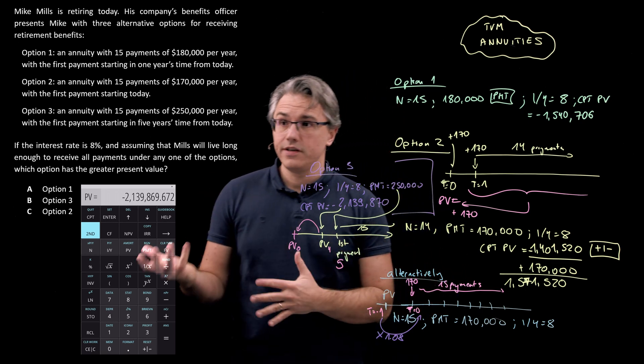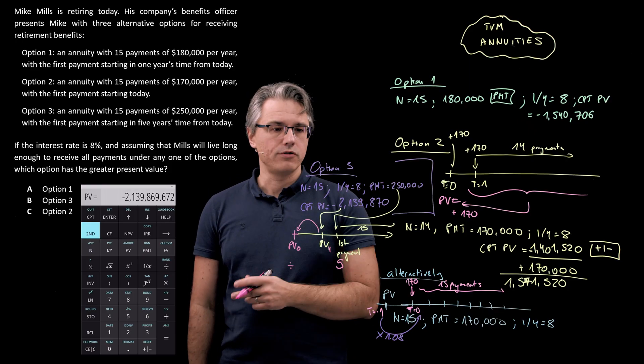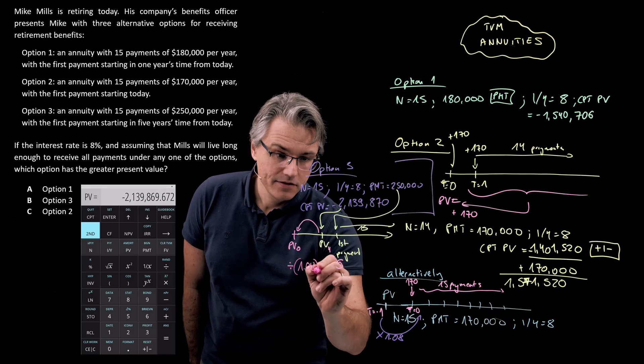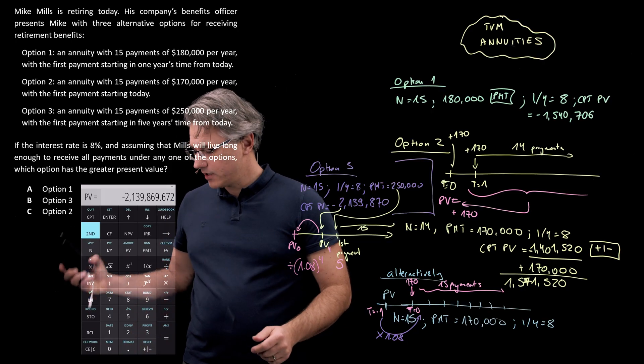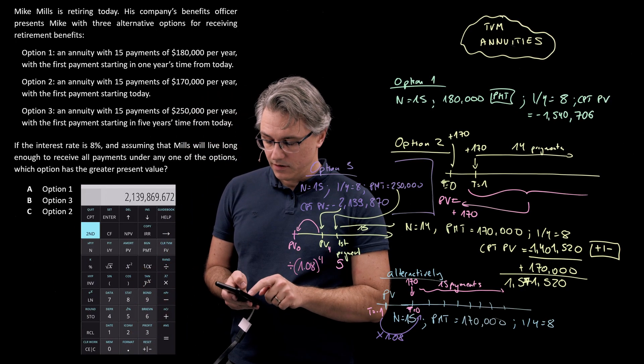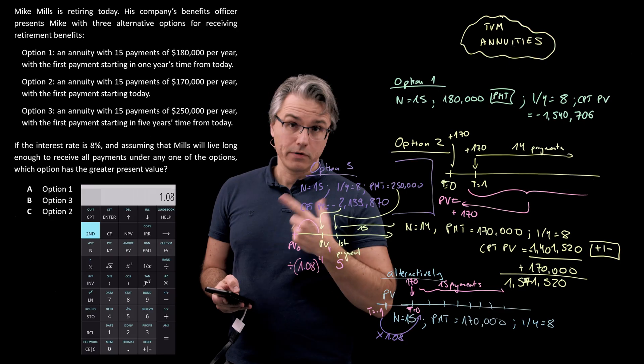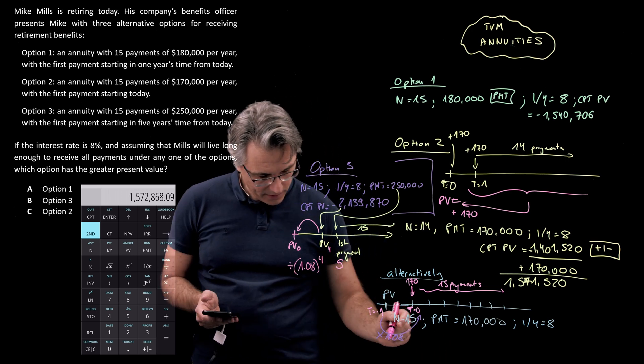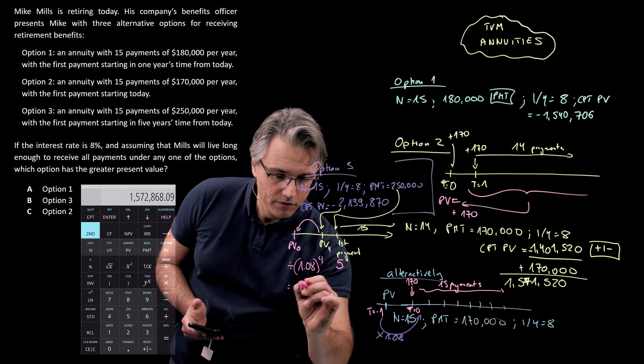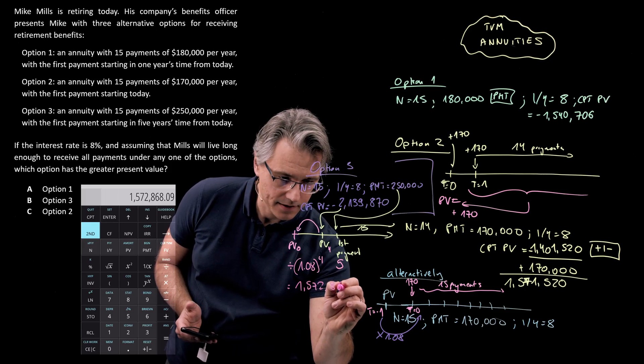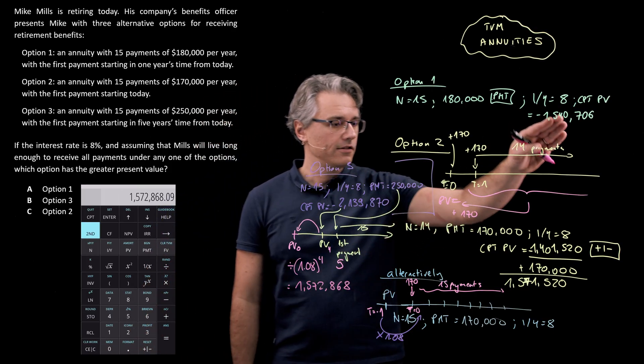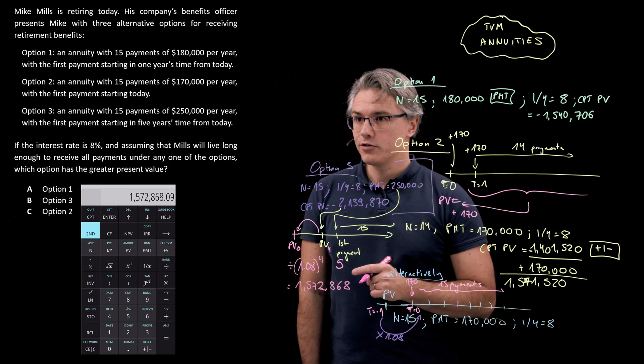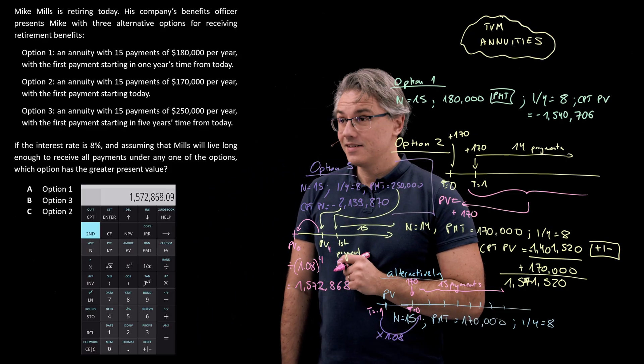So in order to make this a PV at time zero, which will make it comparable with the other computations, we need to discount this back over four periods, over four years. And you can do this using the TVM, or you can simply divide this number, $2,139,870, by a factor of 1.08 to the power of 4. I'm going to get rid of the negative sign by pressing plus minus, divide by 1.08 to the power of 4, equals $1,572,868. So which of these is the highest? It's definitely not the first one. The second one's higher, but this one with $1,572,868 is the highest of the three options in terms of its present value. So the correct answer in this case is option three, and that's answer B.